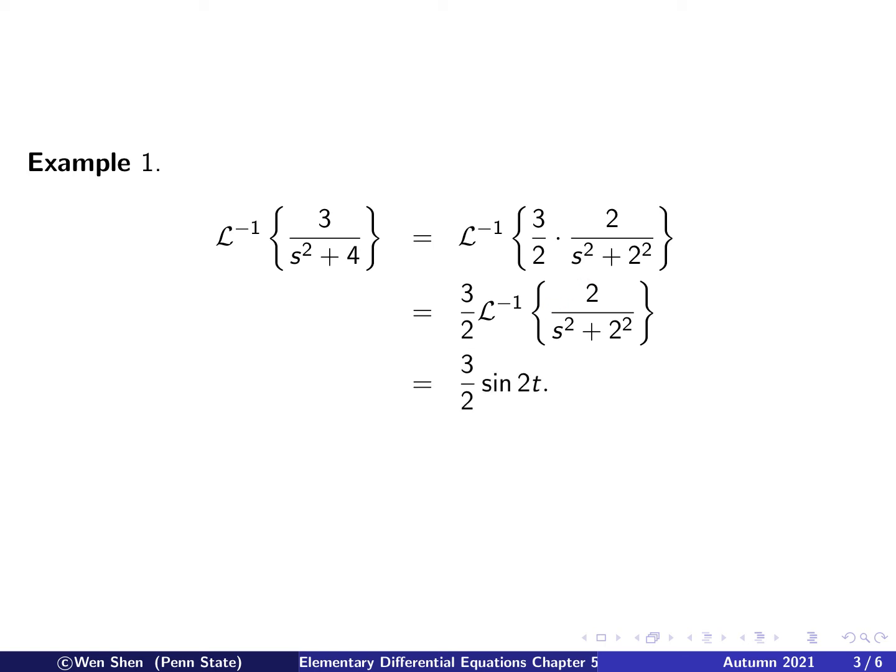As we have said before, we constructed this function such that the f(t) generated this one is a sine function. So we'll have sin(2t) here and multiply by the constant 3/2. So this is our first example.